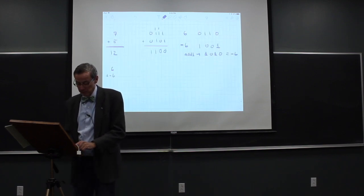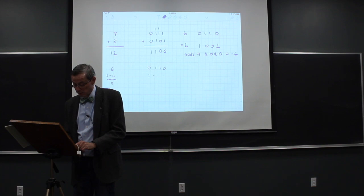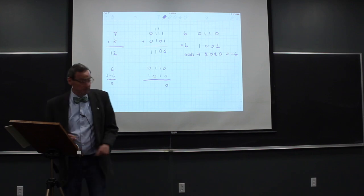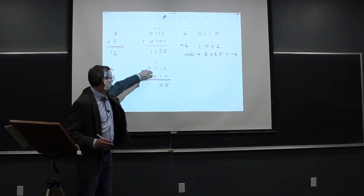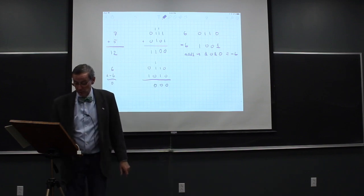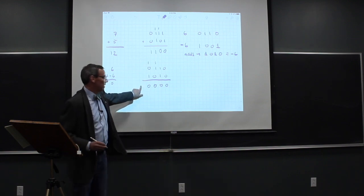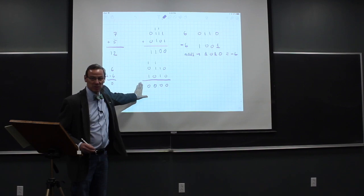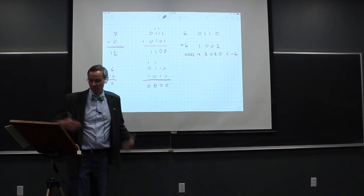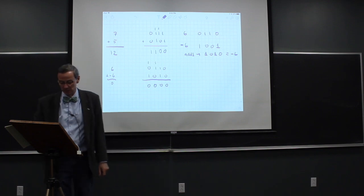We can verify: six plus minus six should equal zero. Six is 0-1-1-0 and minus six is 1-0-1-0. Adding them: one plus one gives zero with a carry, repeated through each column. The final carry bit overflows out — we throw it in the bit bucket — so six plus minus six gives zero. This is a very good way to represent negative numbers on a computer.